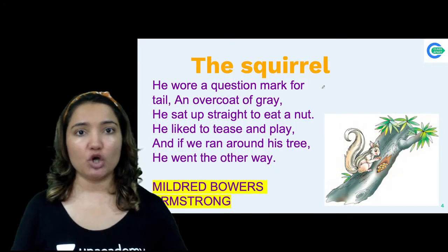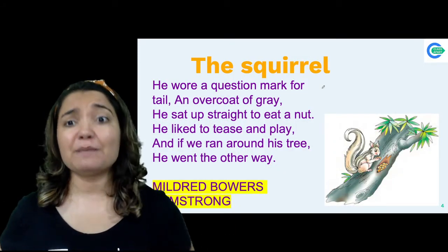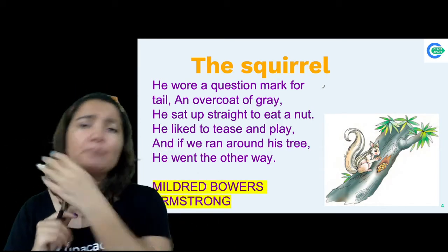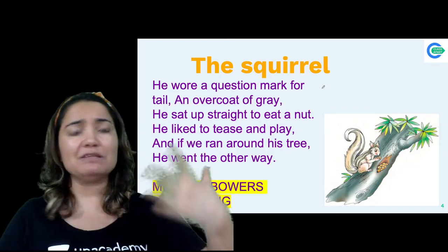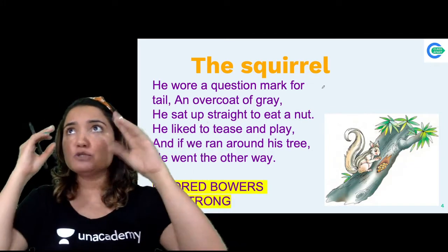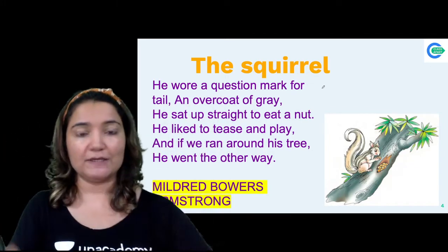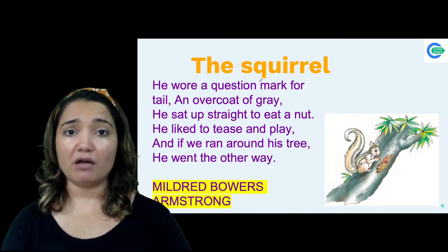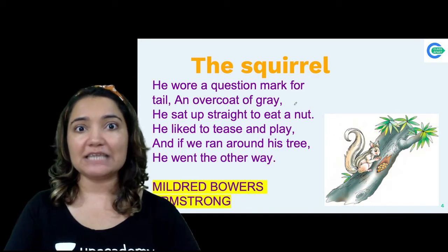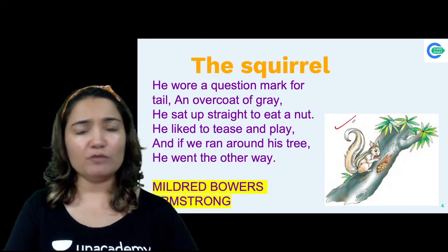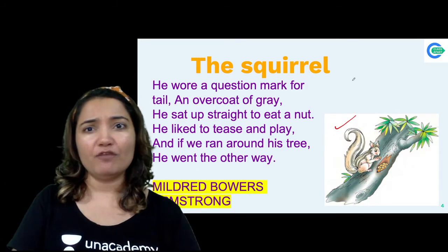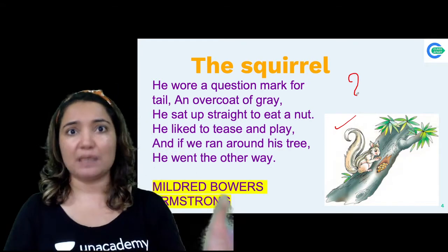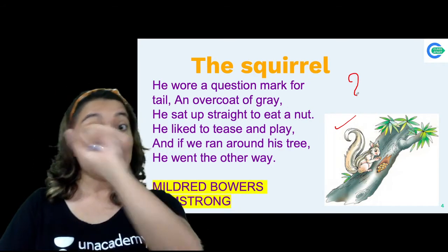First, let me give you a brief description of the poem. You've all seen a squirrel, so when you visualize it, this description feels very relatable. The first line says 'he wore a question mark for tail' — meaning the squirrel's tail is in the form of a question mark. You know how it's kind of curled — that curved tail very closely resembles a question mark.